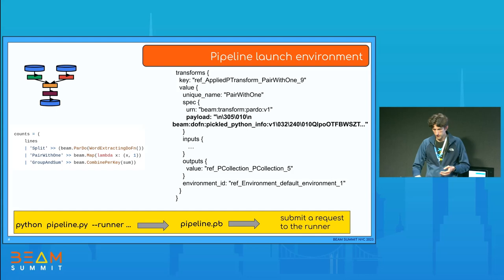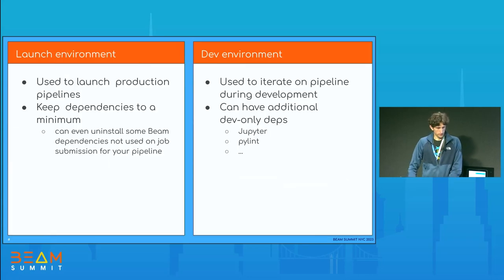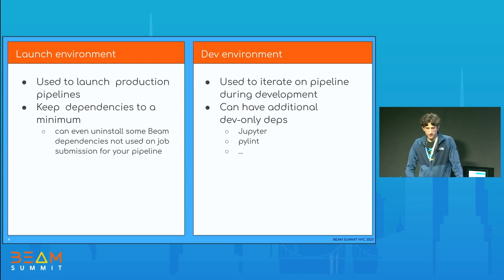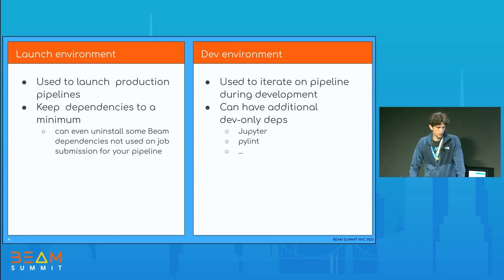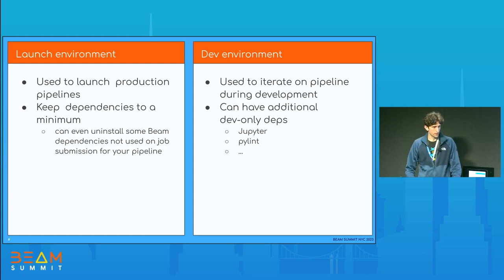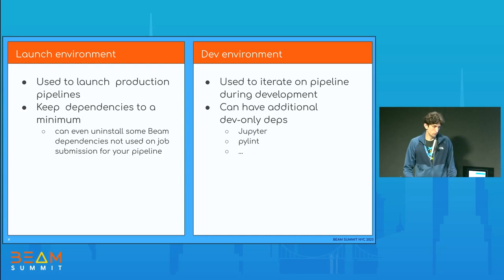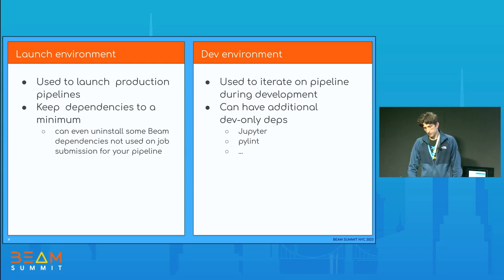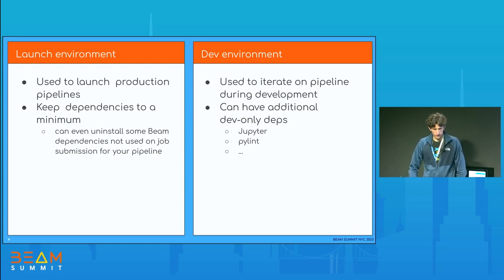The pipeline graph is translated into a proto file, where your transform becomes translated in a Beam runner API representation, and the do functions become serialized into a binary payload sent over the wire. This translation happens in the launch environment. In addition to the launch environment, sometimes people have a dev environment with additional dependencies not necessary for production. Typically you would want to keep dependencies in the launch environment to a minimum — you could even uninstall Beam dependencies not directly relevant, such as IO connectors you don't use.